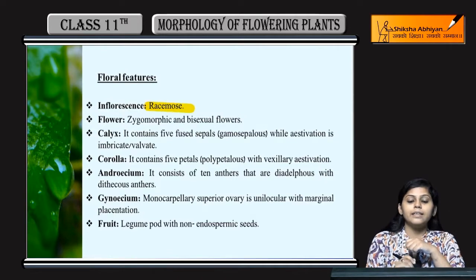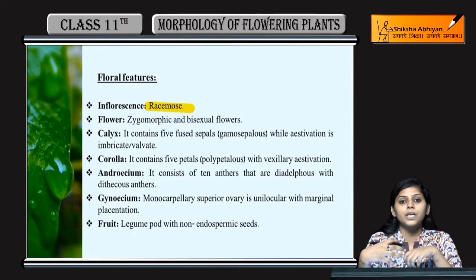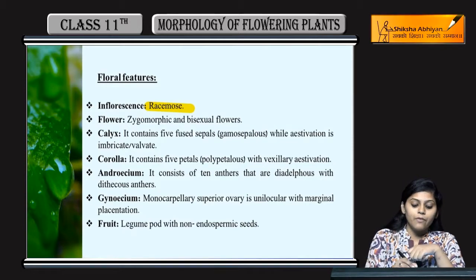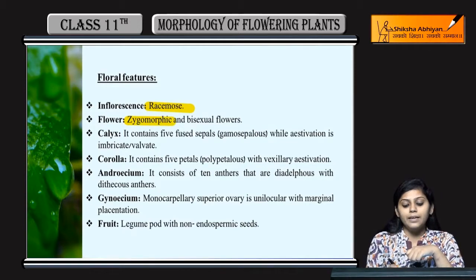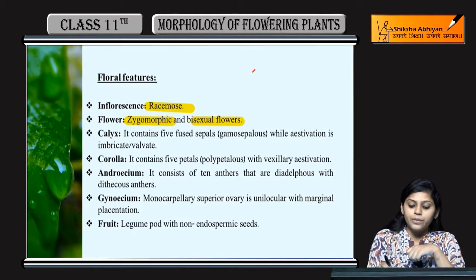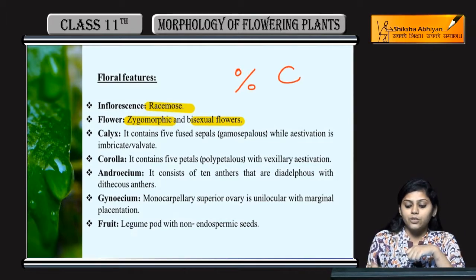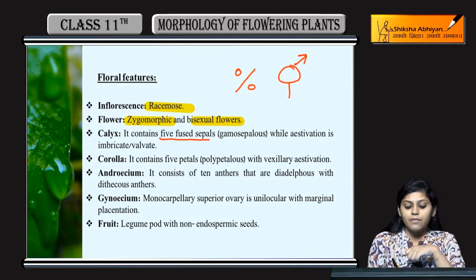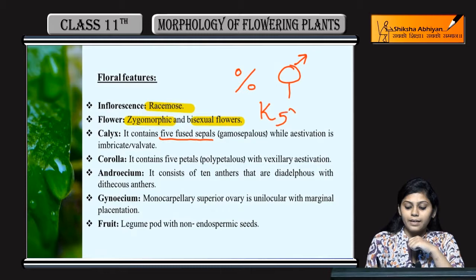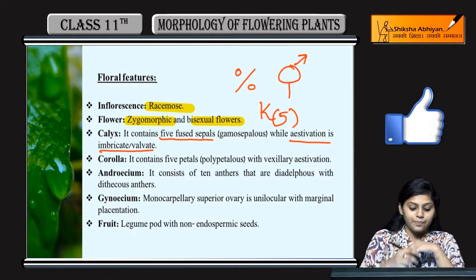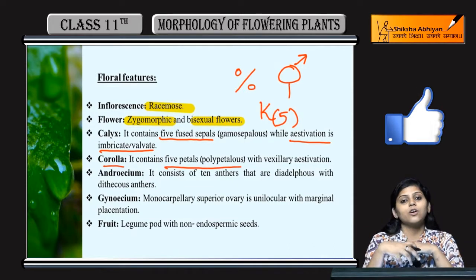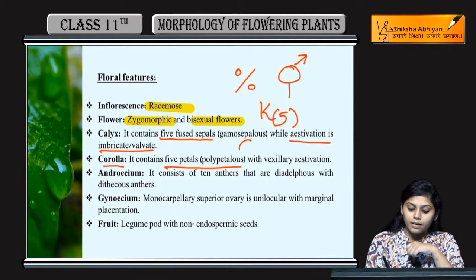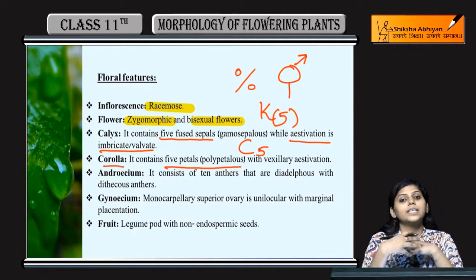Ab iske floral features ko dekhein. Racemose inflorescence hota hai, jisme acropetal succession hoti hai. Flowers are zygomorphic and bisexual. Zygomorphic ko hum percent sign se denote karte hain aur bisexual ko is sign se. Next, calyx mein five fused sepals hain - imbricate and valvate type. Corolla mein five free petals hain with vexillary estivation.